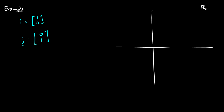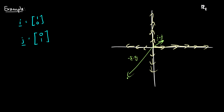So we have vector i there and vector j there. The span covers all possible combinations of i and j. We can go this many i's to the right, we can take negative i's, we can take a bunch of j's, we can go negative j, and we can do any combinations of these. We could end up at this point here by taking i plus j, getting that vector. We can take negative 3i minus 4j and end up down here. We can get this whole plane.